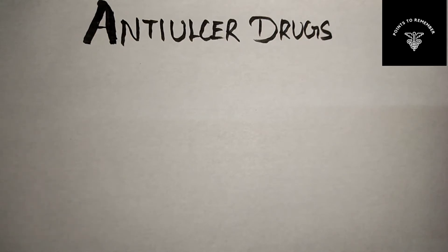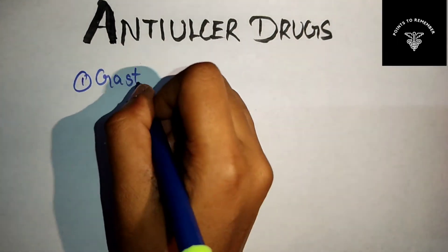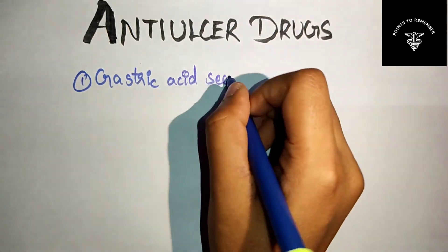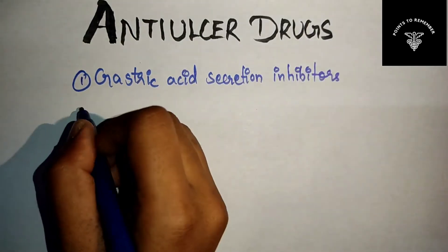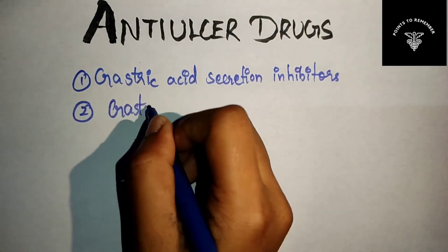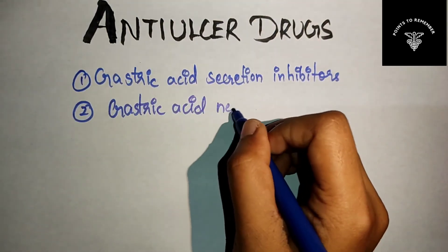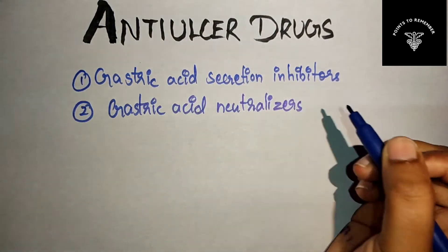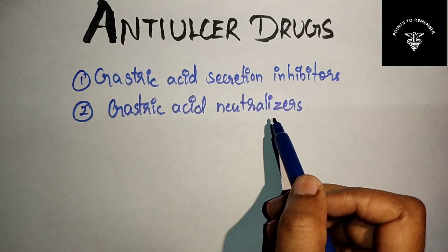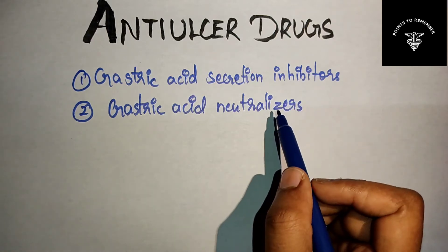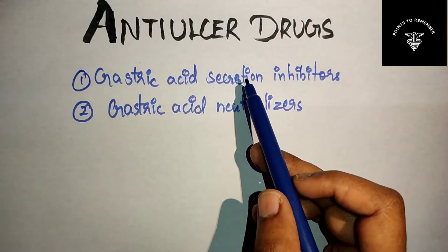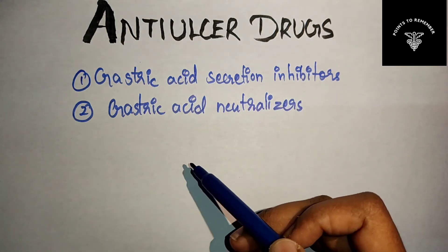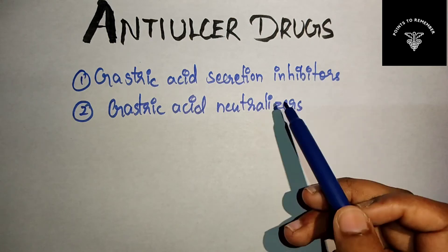The classification of anti-ulcer drugs includes two categories. One will be your gastric acid secretion inhibitors, and the second one will be your gastric acid neutralizers. One will be the inhibitor and the other one will be the neutralizer, and these are further divided. This is the classification of the anti-ulcer drugs.